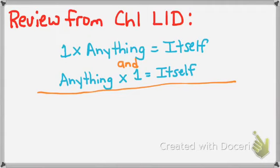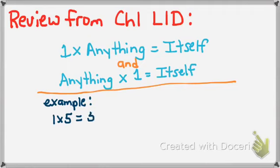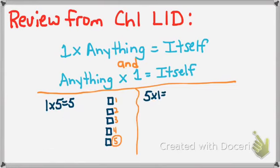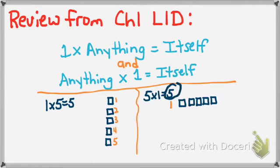A review from Chapter 1, Lesson 1D: 1 times anything equals itself, and anything times 1 equals itself. So 1 times 5 equals 5 — I have 5 one time, and that answer is 5. Anything times 1 equals itself, or 1 times anything equals itself.